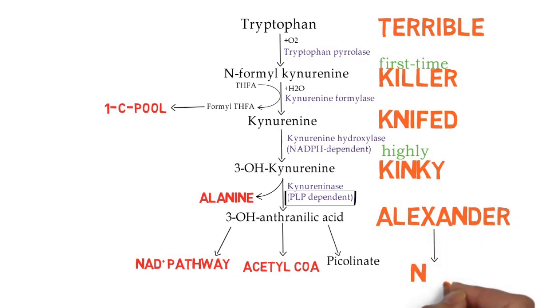The mnemonic for the remaining pathway is: 'Terrible first-time killer, knifed highly kinky Alexander, and after that he went to NAP.' Terrible = tryptophan; first-time killer = formyl kynurenine; knifed = kynurenine; highly kinky = hydroxy kynurenine; Alexander = anthranilic acid; NAP = NAD pathway, acetyl coenzyme A, and picolinate.